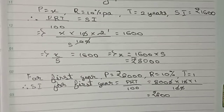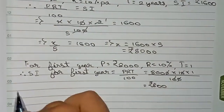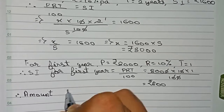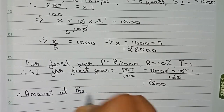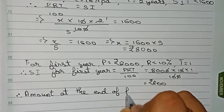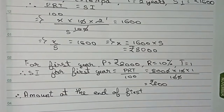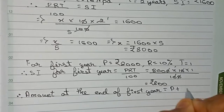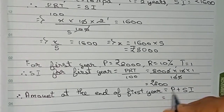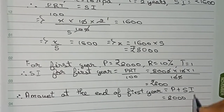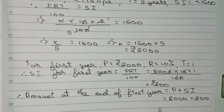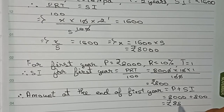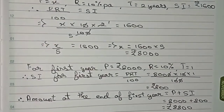Now we find the amount at the end of the first year. The formula is principal plus SI, so it is 8,000 plus 800, and the amount at the end of the first year becomes rupees 8,800. Now we will find the interest for the second year.